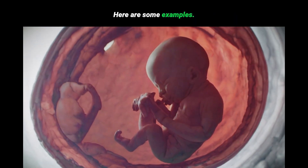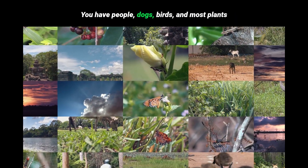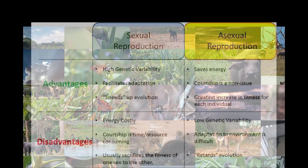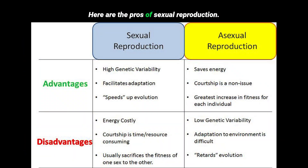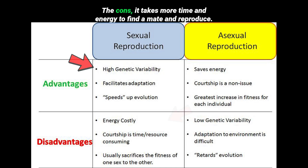Examples of sexual reproduction include people, dogs, birds, and most plants. The pros of sexual reproduction are that offspring are all different, which helps species survive changes in their environment. The cons? It takes more time and energy to find a mate and reproduce.